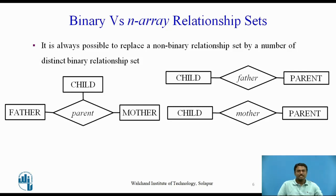Relationships in databases are often binary. Some relationships that appear to be non-binary could actually be better represented by several binary relationships. For instance, one could create a ternary relationship parent relating a child to his or her mother and father. However, such a relationship could also be represented by two binary relationships — mother and father — relating a child to his or her mother and father separately. Using the two relationships mother and father provides a record of a child's mother even if we are not aware of the father's identity. A null value would be required if the ternary relationship parent is used, so using binary relationship sets is preferable in this case.